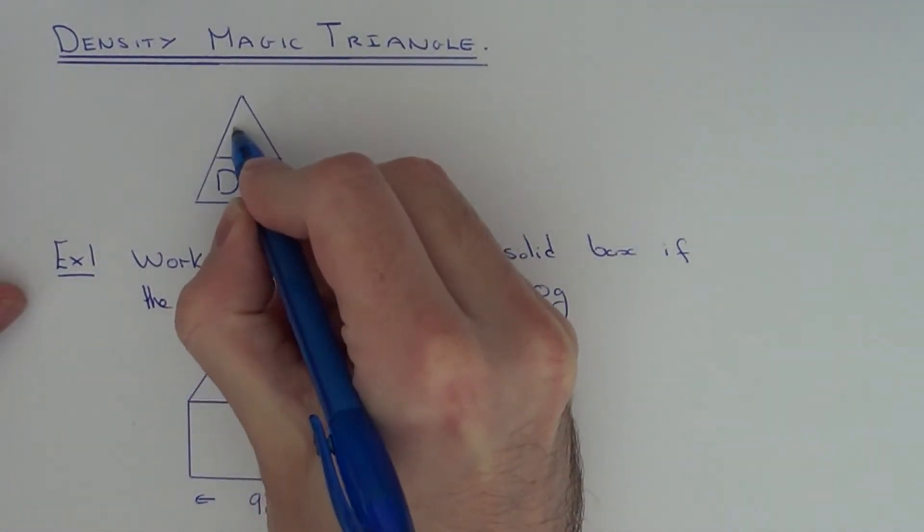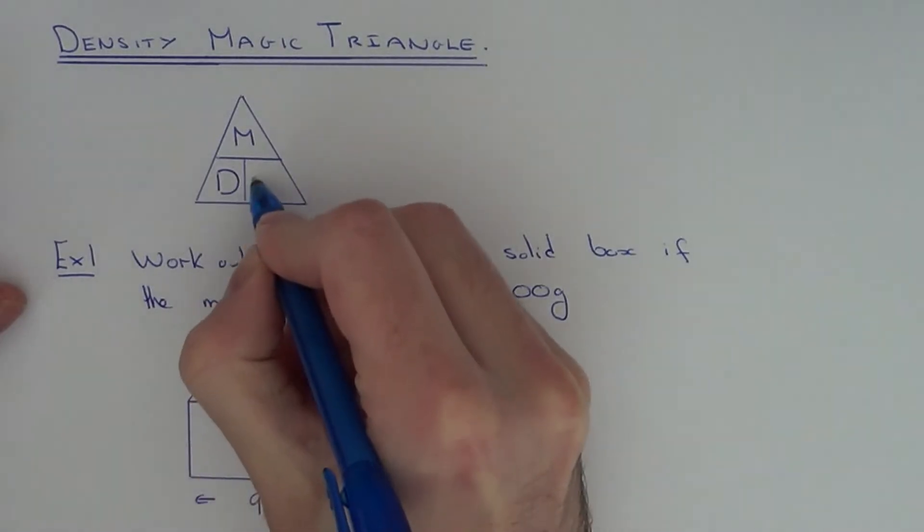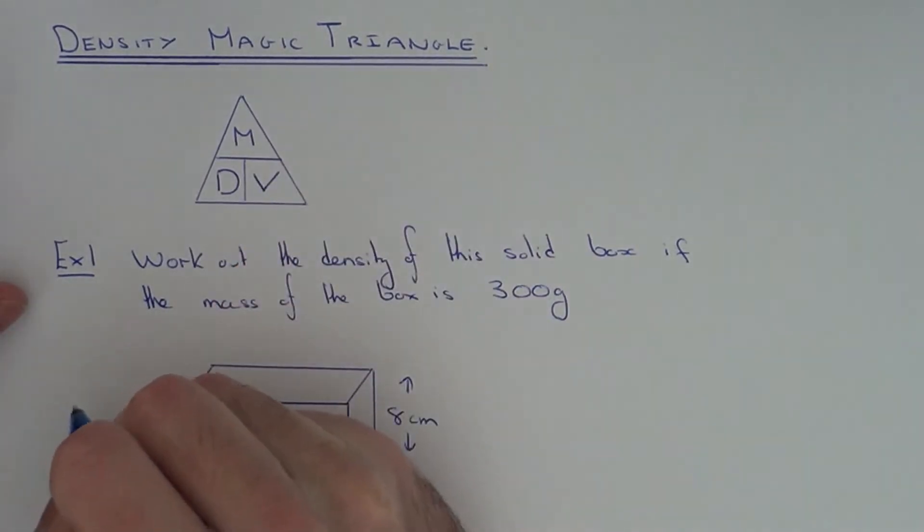The mass will go at the top of the triangle and the volume will go in the bottom right of the triangle.